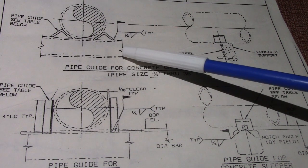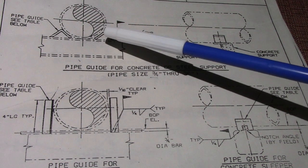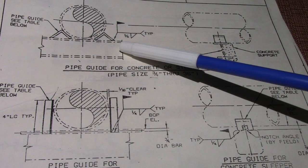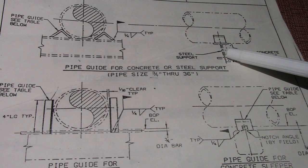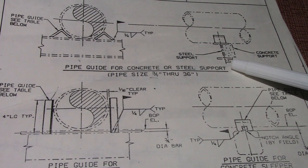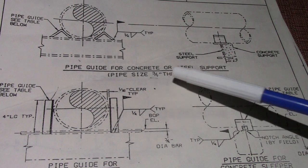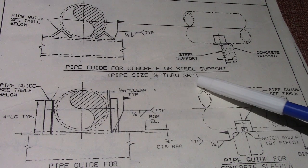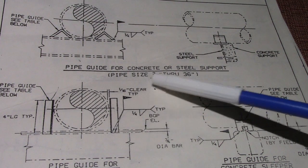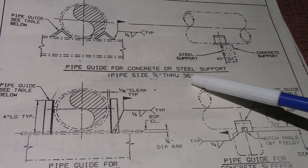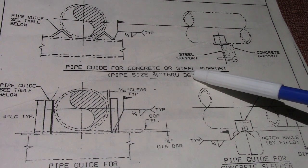Number one is an example of a guide. We have the dimensions here. This is a pipe guide on concrete or steel support. The pipe size is 3/4 to 36 inches — NPS nominal pipe size, 3/4 to 36 inches.